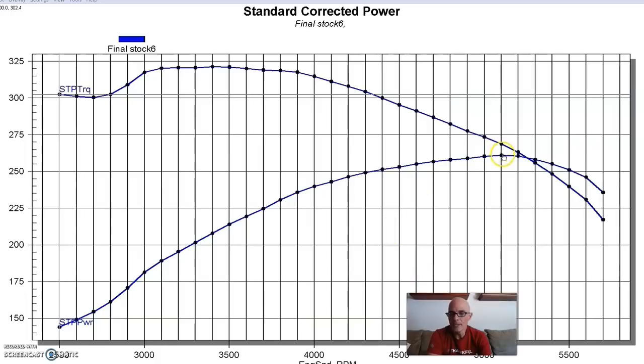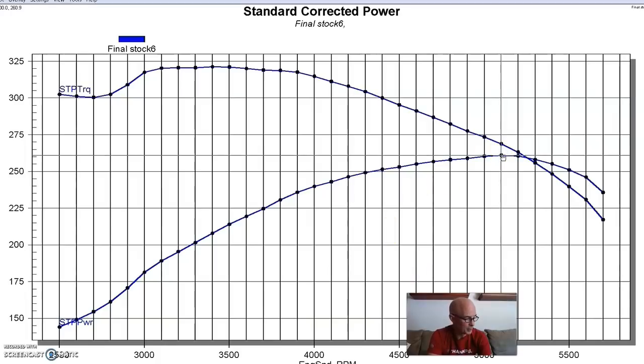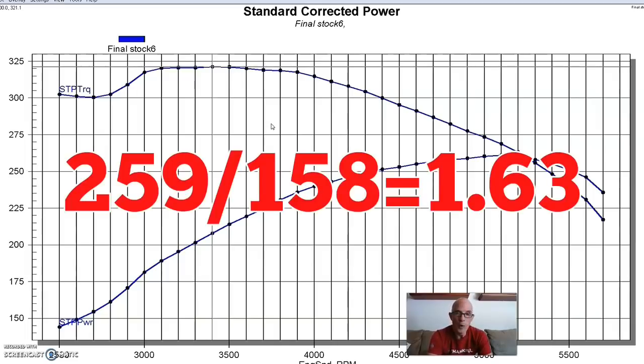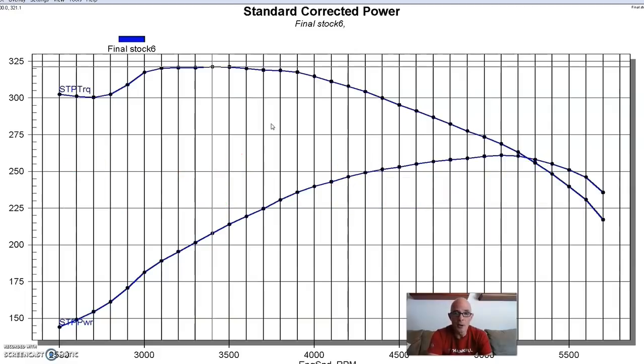Pretty typical, and that makes 259 horsepower and 320 or so foot-pounds of torque. Now, what we do is use our formula to compare and see how much power we're making per CFM, basically how well we're using that cylinder head. If we divide 259 by 158 CFM, we get 1.63 horsepower per CFM. That's pretty good for a stock motor.